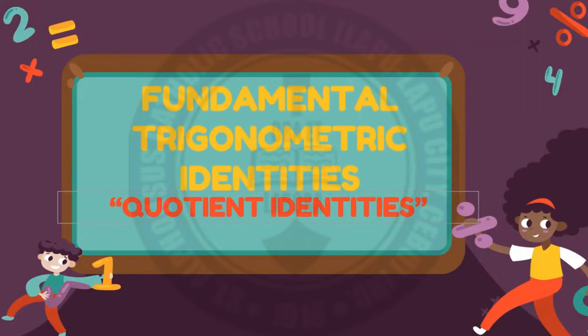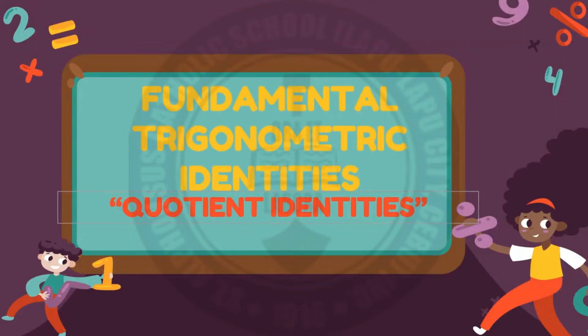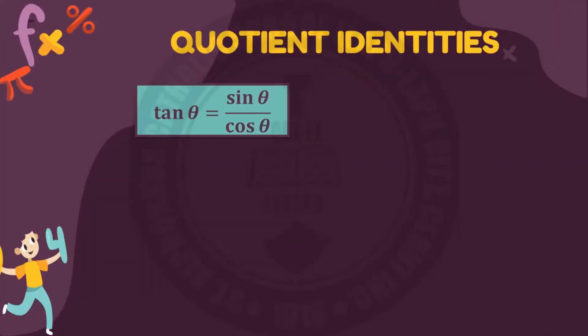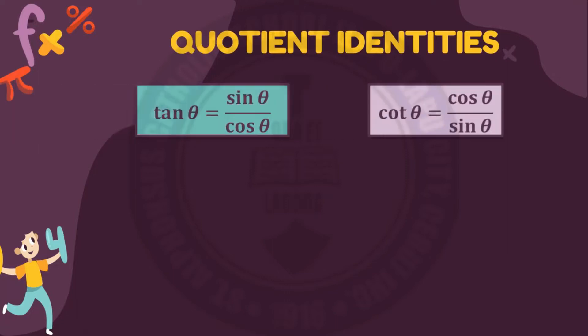The second fundamental trigonometric identities are the quotient identities. There are two identities for quotient identities. These identities came from the reciprocal identities. The first quotient identity is tangent theta equals sin theta over cos theta. The second quotient identity is cotangent theta equals cos theta over sin theta.